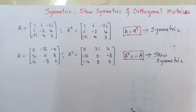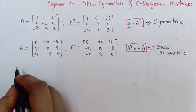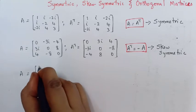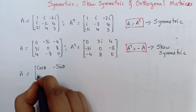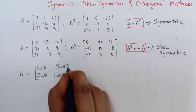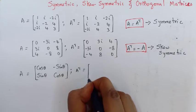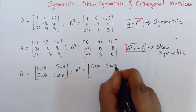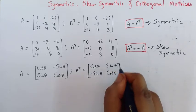Next, let us see when we call a matrix an orthogonal matrix. Consider a matrix A as cos θ, -sin θ, sin θ, cos θ. For this matrix, the transpose is cos θ, sin θ, -sin θ, cos θ.